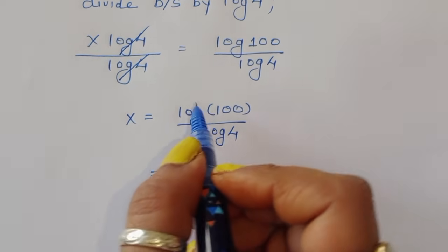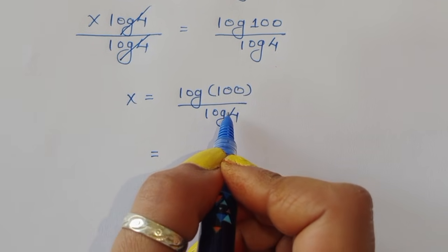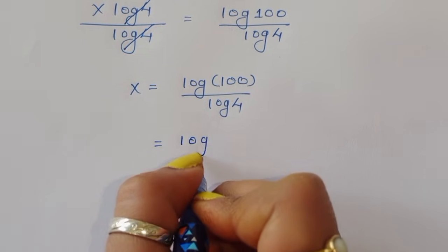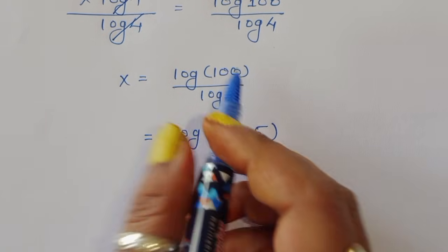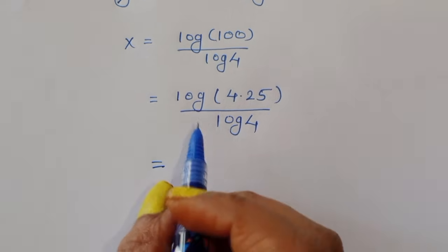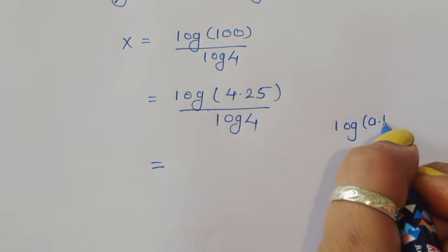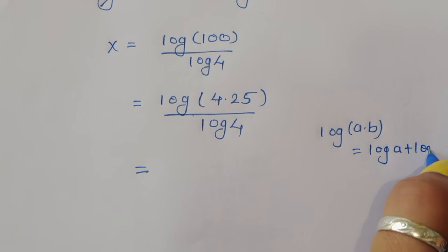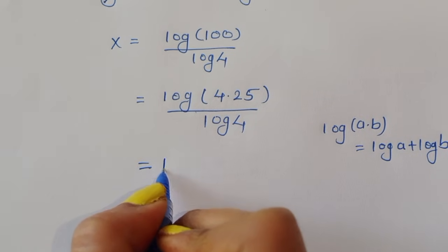Now we can convert 100 into multiplication form: 4 times 25 equals 100. So we have log of 4 times 25 divided by log of 4. Using the product rule — log of a times b equals log of a plus log of b — we get log of 4 plus log of 25, all divided by log of 4.